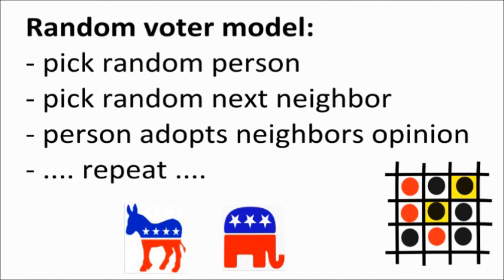In the voter model, think of this chessboard as a number of people. Every square is a person, and people can have opinions. Consider, for example, that a person can only hold two opinions on a question — like voting Democrat or Republican. Let's say red is Democrat and black is Republican. People on the chessboard can alter their opinions according to different evolution rules.